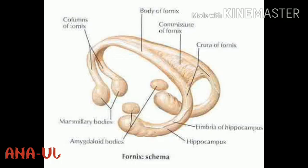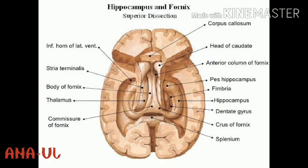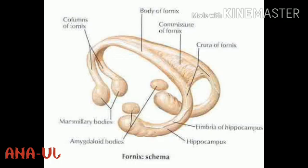Next we are going to learn about the fornix. The fornix is a prominent bundle of fibers seen on the medial aspect of the cerebral hemispheres. The fornix is made up of fibers arising from the hippocampus. The body of the fornix is suspended from the corpus callosum by the septum pellucidum. The nerve fibers arise from the alveus, a thin layer of white matter covering the surface of the hippocampus, and converge to form the fimbria.